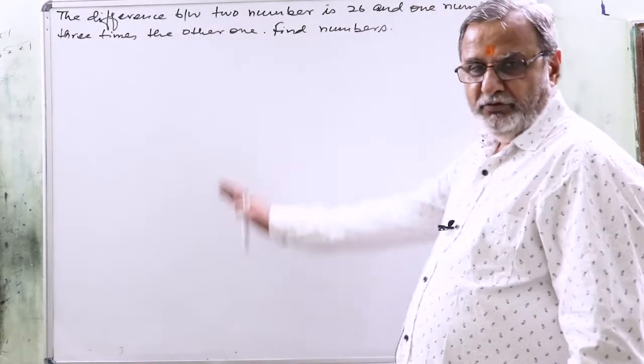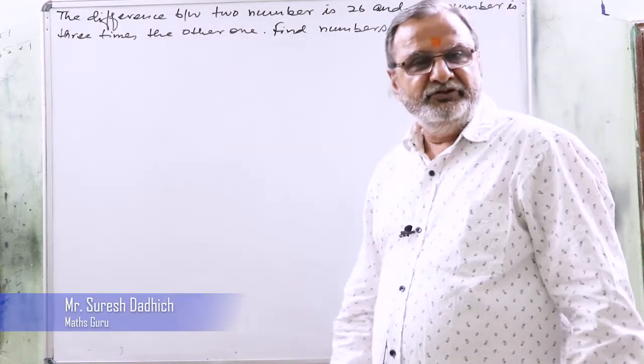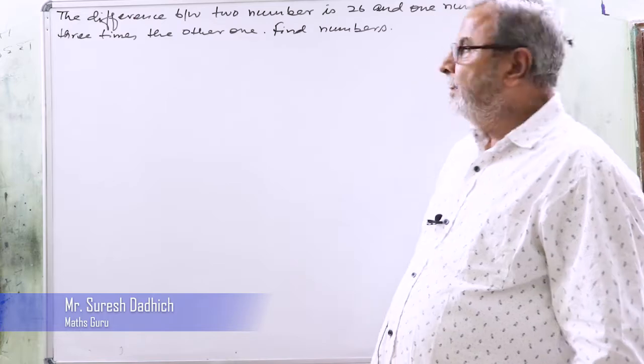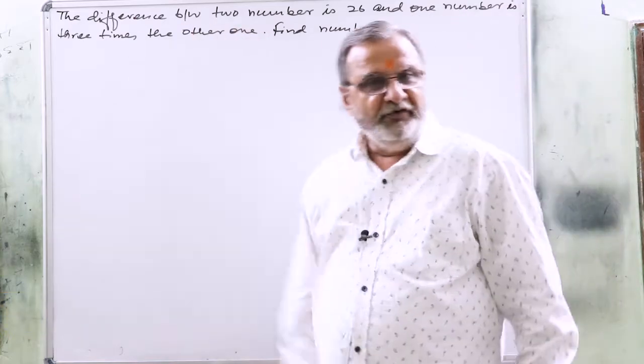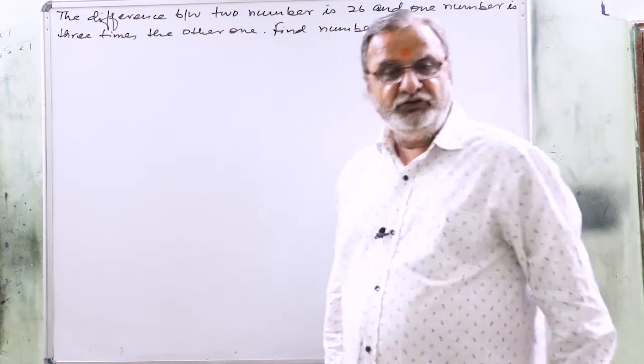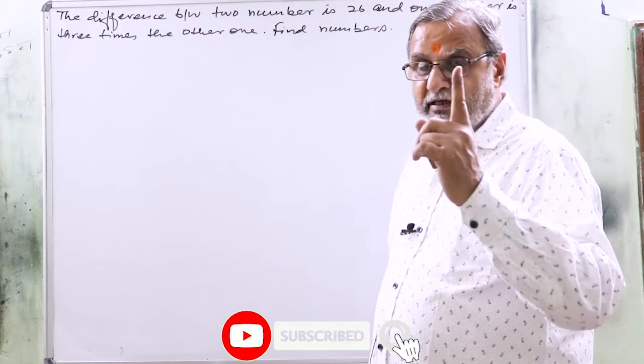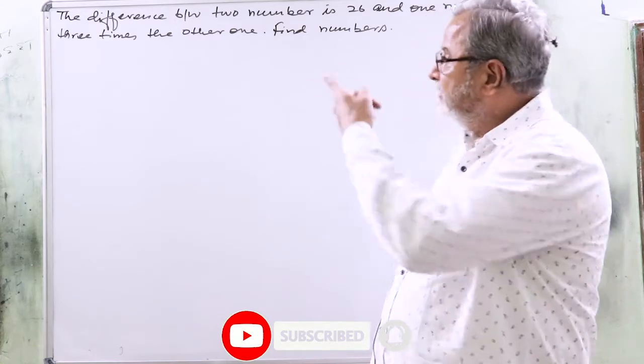Dear student, the question is taken from exercise number 3.3, NCERT Maths 10th. The question is: the difference between two numbers is 26 and one number is three times the other one.